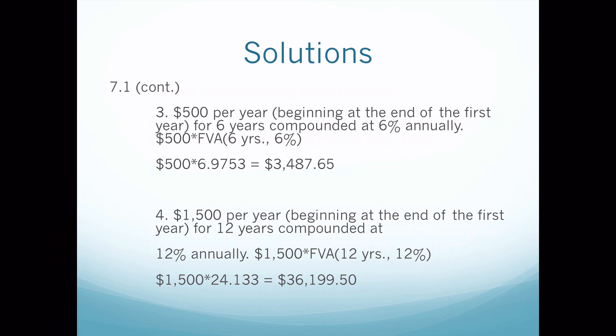Problems three and four are both annuities, and we know this because after the number — the $5,000 — you see 'per year.' 'Per year' means we're going to have multiple cash flows. The parentheses say 'beginning at the end of the first year.' In later chapters we'll have cash flows that start at time period zero versus end of year, but for chapters six, seven, and ten you won't have to worry about that, so you can go straight to the book and use the formula without adjustments.